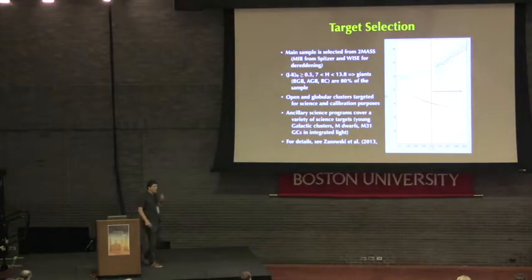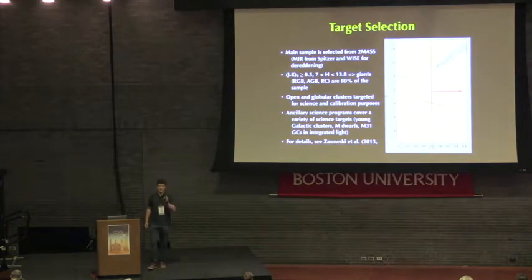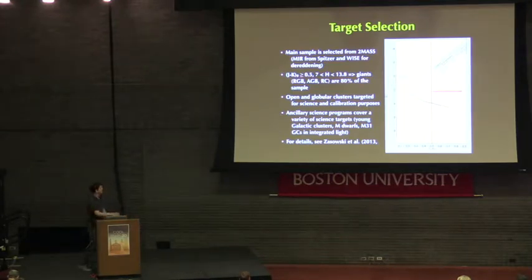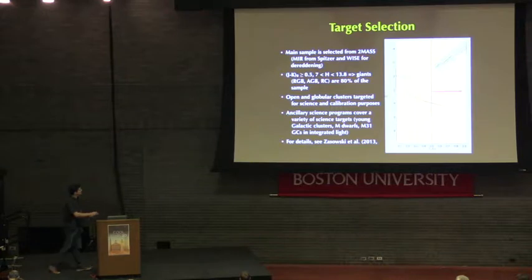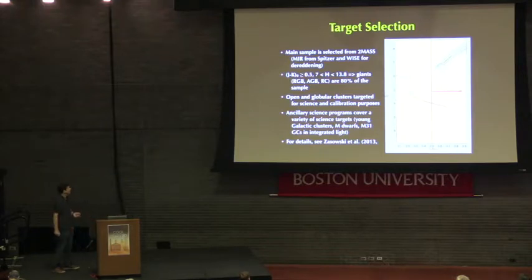One of the important things about making this simple is to use a simple target selection criterion. In our case it's just a color cut — we take stars redder than J minus H of 0.5. This is the main APOGEE sample. There are ancillary programs and subsamples, but the main sample consists of a very simple color cut, which makes modeling the selection function much more tractable than if we had made more complicated selection criteria.